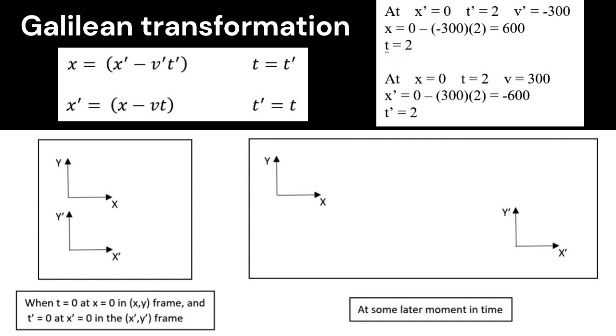So you plug those numbers into the second equation, and x prime is x 0 minus vt. Well, it's minus 300 times 2, so x prime is minus 600. So that's the plane seeing the tower as 600 feet behind it, again, at time equals 2.